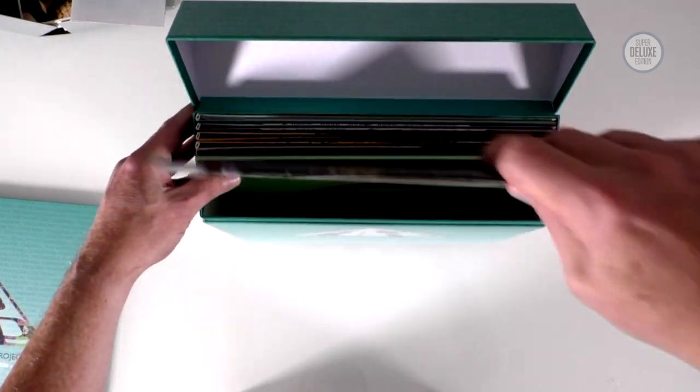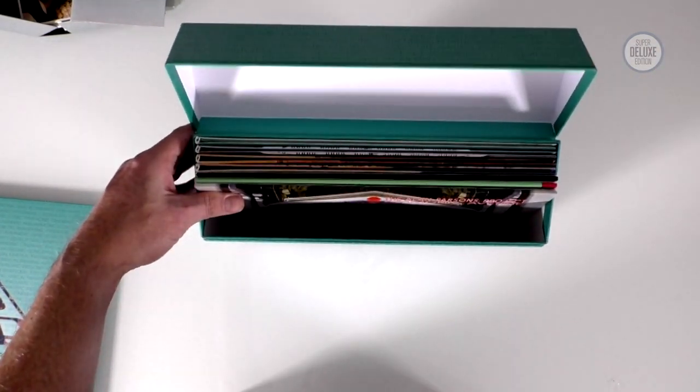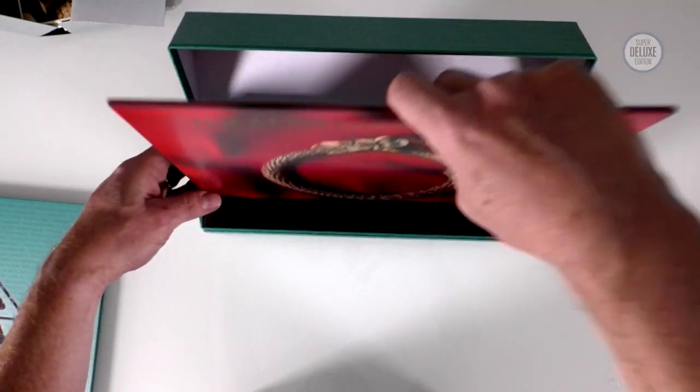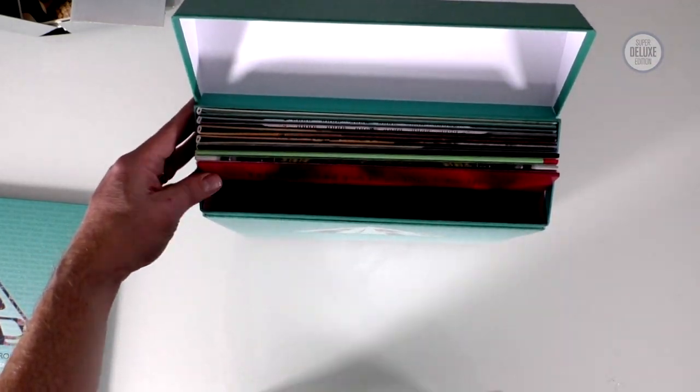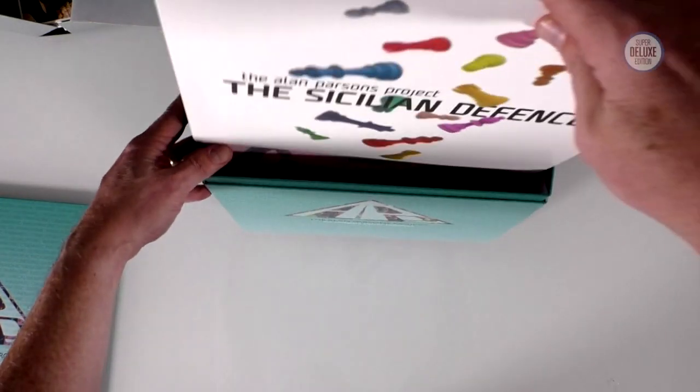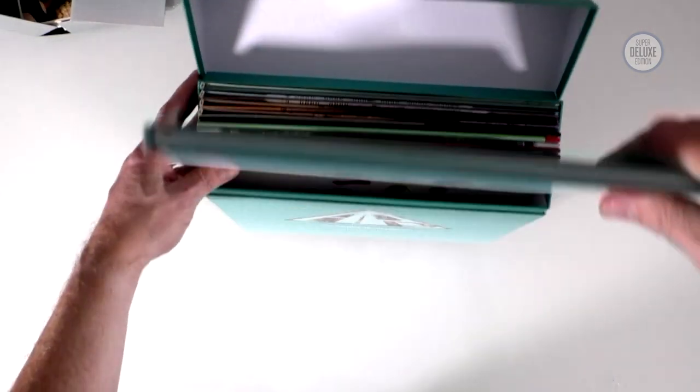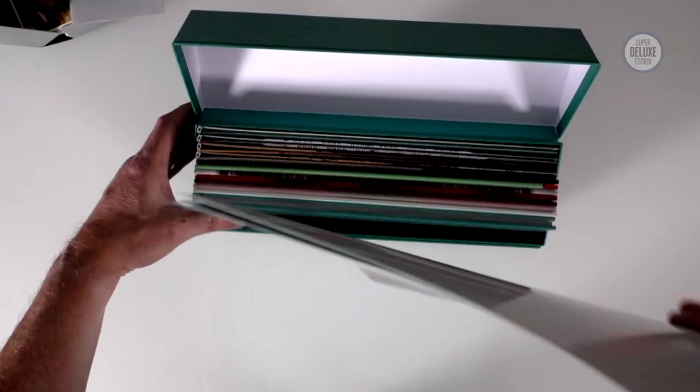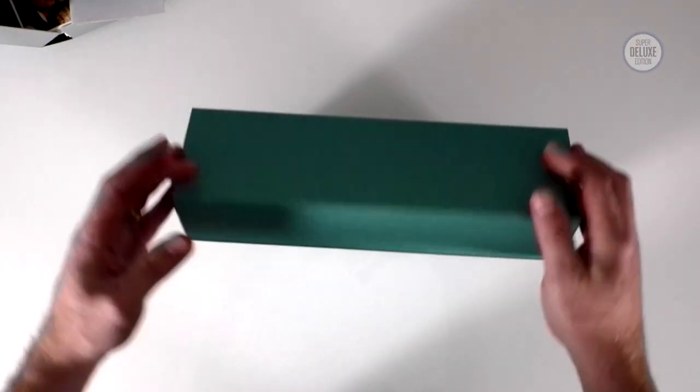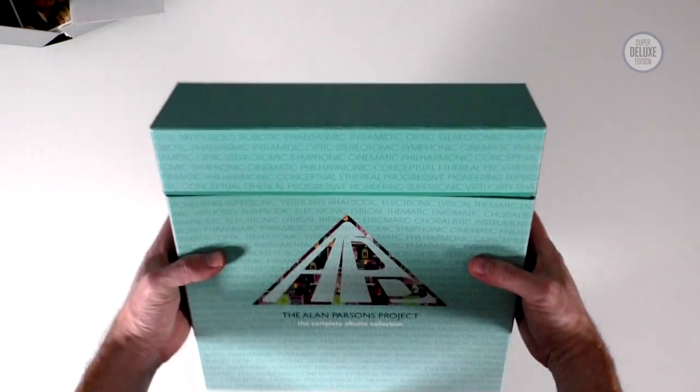So these will go back in. And even with the book and the poster, you're not ramming it in. There's plenty of space in here which is what you want. So there's the last one there, that's the Sicilian Defence. And then the book slots in. Poster here. And there we go.